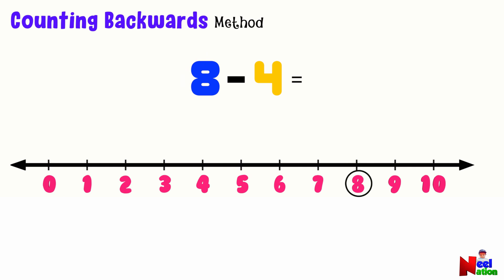So keeping 8 in mind, you make 4 jumps backwards to the left. So starting before 8, we jump to 7, 6, 5 and 4. We have landed on 4. So the answer is 4. 8 minus 4 equals 4.